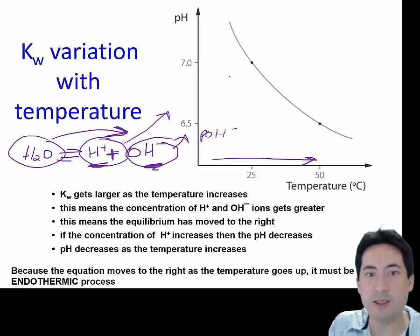So technically it's neutral but the pH is less than seven because the concentration of hydroxide ions and hydrogen ions is the same.